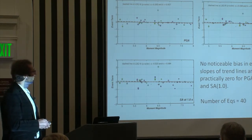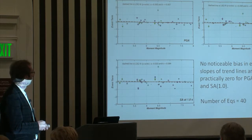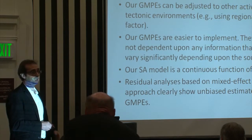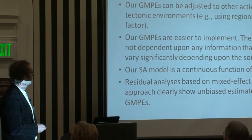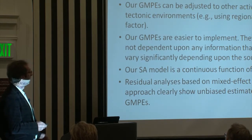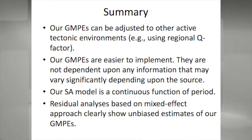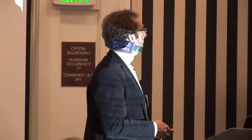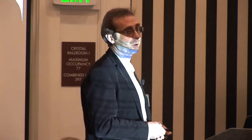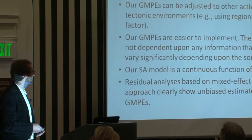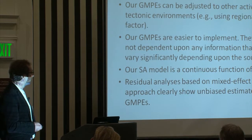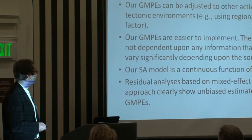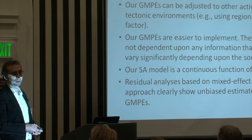We are about to finish our open file report and will provide all these figures and results for other periods. This information will be publicly available soon. In summary, our ground motion prediction equation can be adjusted to other regions — we have now included a Q factor to compensate for that. Our model equations are not multi-page long equations; they are very simple. Our spectral acceleration is a smooth function of spectral period, with a very minimum number of coefficients and independent parameters. We did residual analysis using the mixed-effect approach to show that our model is unbiased.